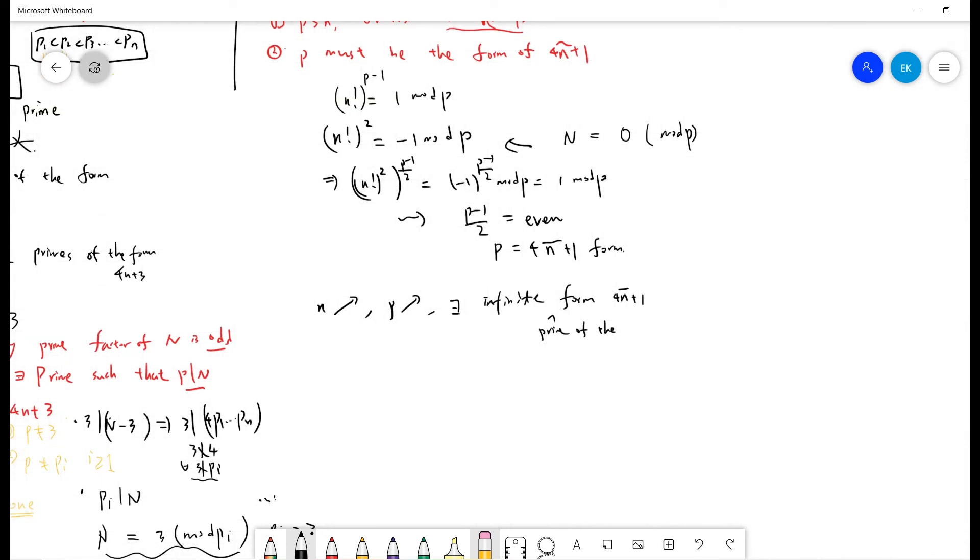So that means if I let n increase, then p always increases, because p is always greater than n. So I have infinite... the integer can be arbitrary large. So p can be arbitrary large. So there are infinite primes of the form of 4n tilde plus 1.